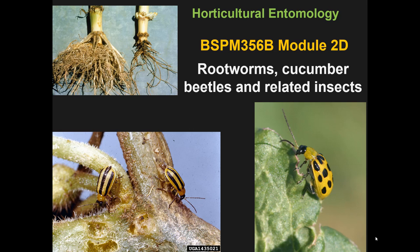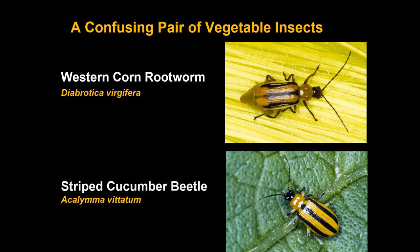Another group of leaf beetles that we find on vegetables very commonly are ones that have names like rootworms or the cucumber beetles. These are all sometimes called diabrotocene beetles because they're in a group that includes the diabrotica. They're moderate-sized beetles, usually brightly colored, but there is a range in habits. Two of them are quite confusing to many vegetable growers because they look fairly similar but are very different in habit: the western corn rootworm and the striped cucumber beetle. Both are particularly common in the Midwest but pretty much found east of the Rocky Mountains.